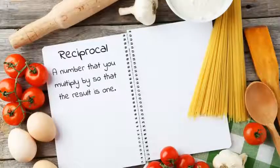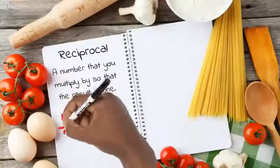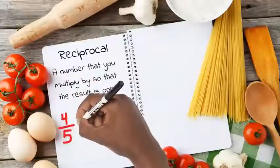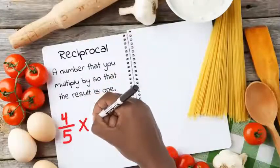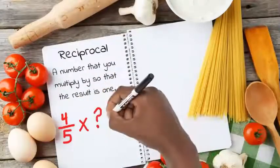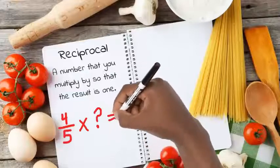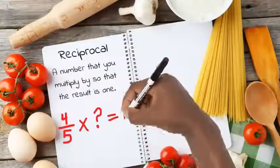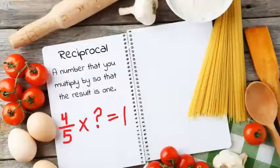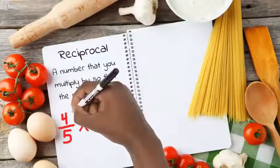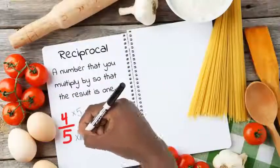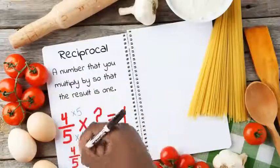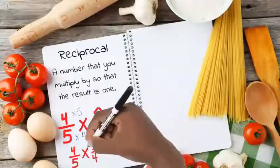Let's say I have a fraction — 4 fifths, for example. A reciprocal is a number you multiply by so that the result is 1. So we need to think: what can I multiply 4 fifths by in order to get 1? If I want the numerator and denominator to be equal, I can multiply the numerator by 5 and the denominator by 4. That gives me 20 twentieths, which is equal to 1 whole.